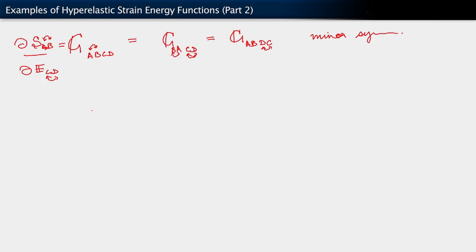It also has this other type of symmetry, which is that C_{abcd} is equal to C_{cdab}. This is called major symmetry.